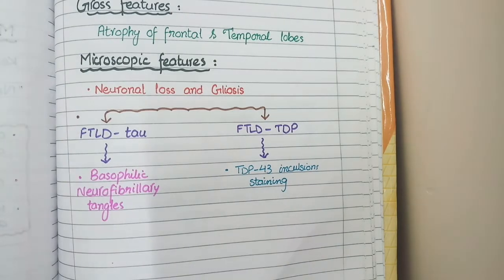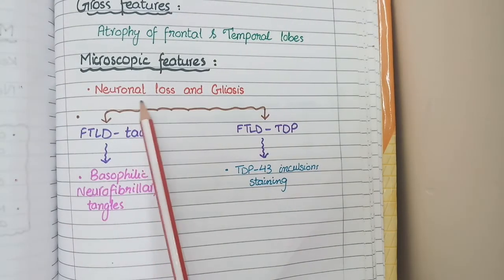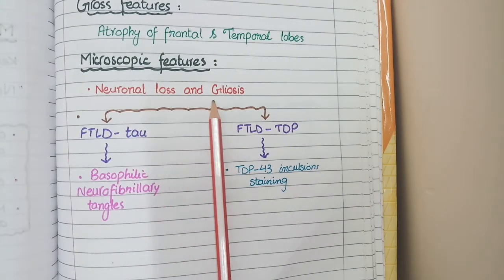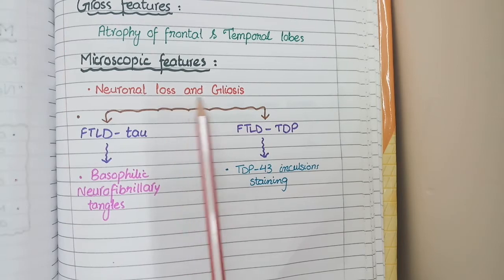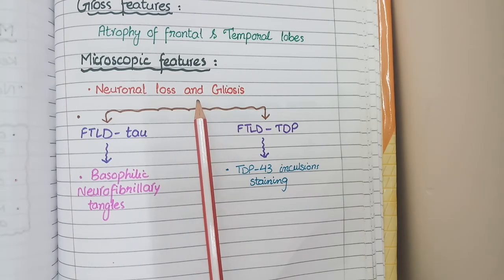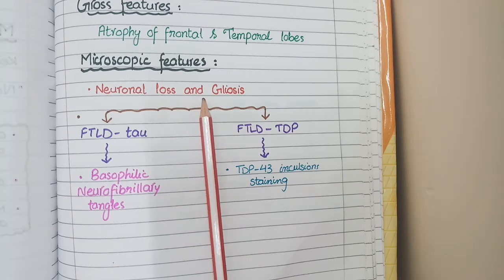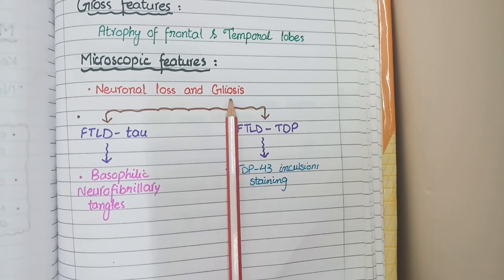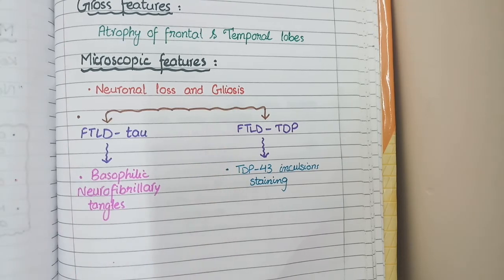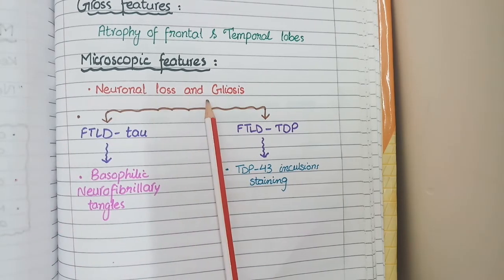The microscopic features of this disease are characterized by neuronal loss in frontal and temporal lobes. And as neurons are being lost, to repair them, there is formation of glial tissue or fibrous tissue that we call gliosis. So you see neuronal loss and gliosis.